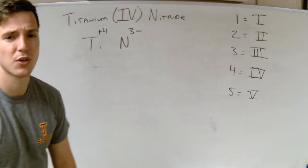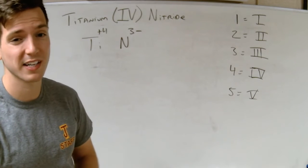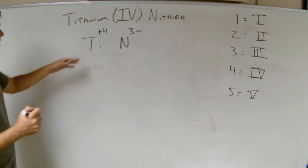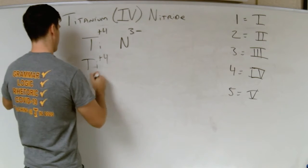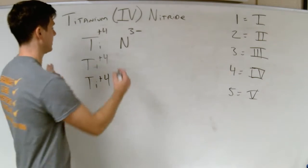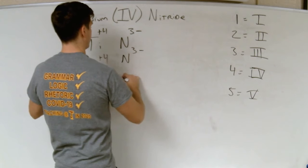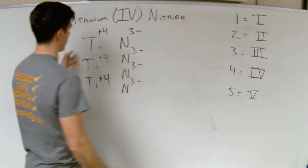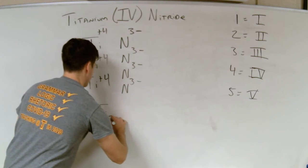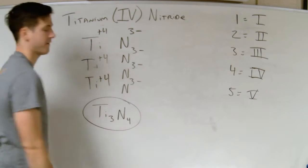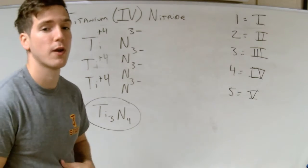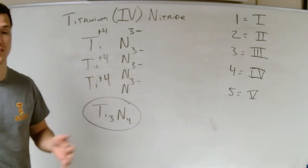Now it's time to balance. What's the lowest number that plus 4 and minus 3 can both go into? 12. To get titanium to 12, I need 3 of them. To get nitrogen to 12, I need 4 of them. That gives us charges of plus 12 and minus 12, so the compound is Ti₃N₄. That's how you go from transition metal names to formulas — if you see a Roman numeral, that's the varying charge of a transition metal.